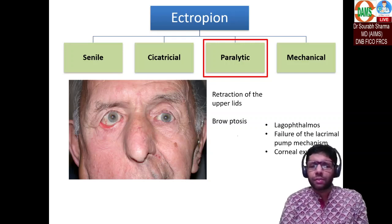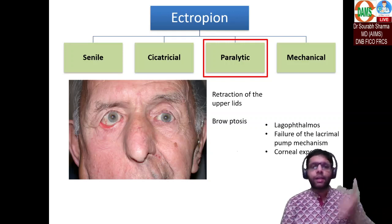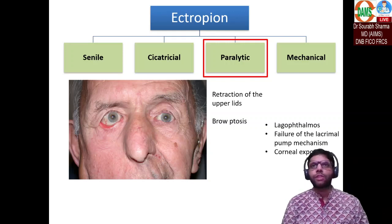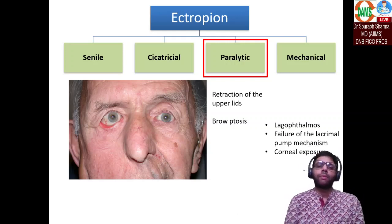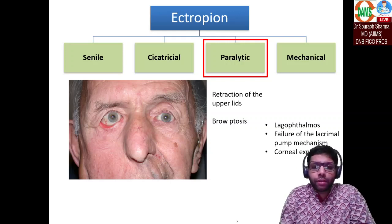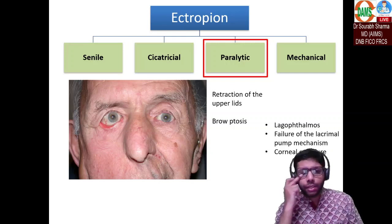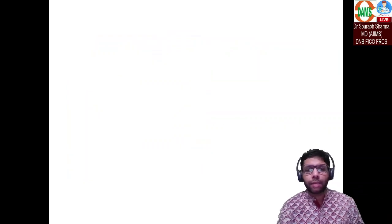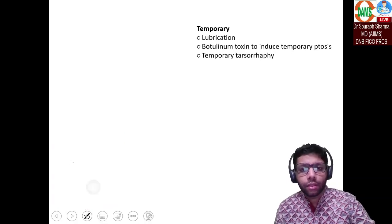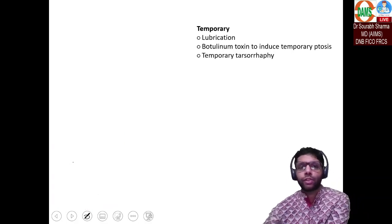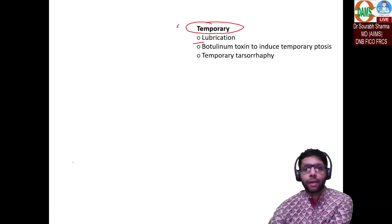Since the patient is unable to close their eyes, you can do temporary tarsorrhaphy. If the seventh nerve palsy is expected to take a long time to recover, a permanent tarsorrhaphy may be done. Medical management includes patching, topical lubricants, and sometimes botulinum toxin injection.